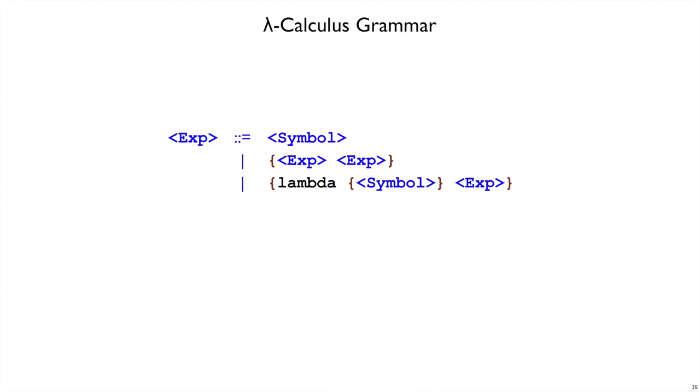You will have noticed that we keep encoding things with lambda, and I've hinted that lambda is difficult to encode with other things.